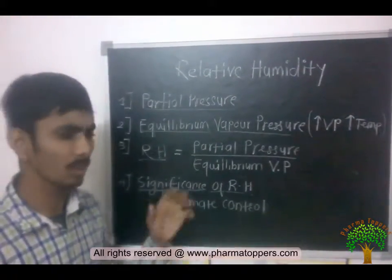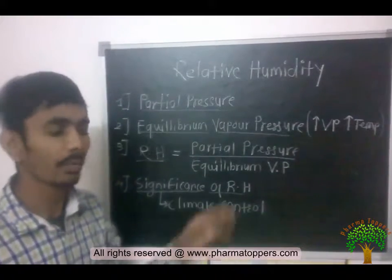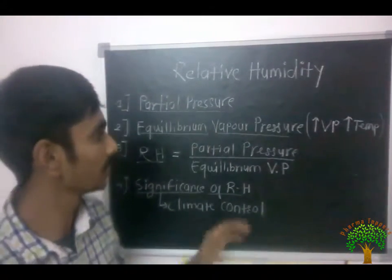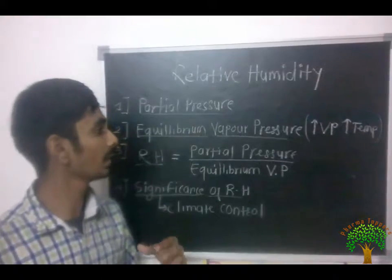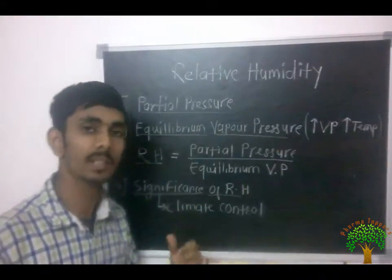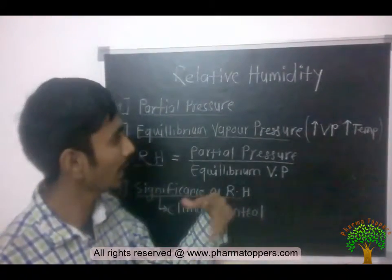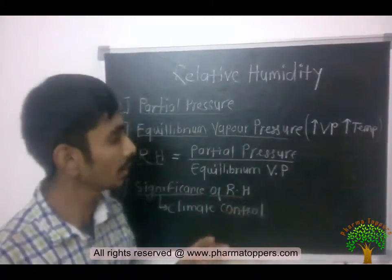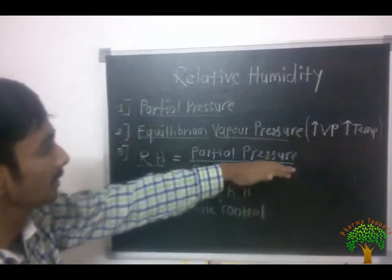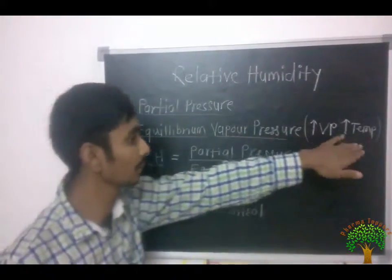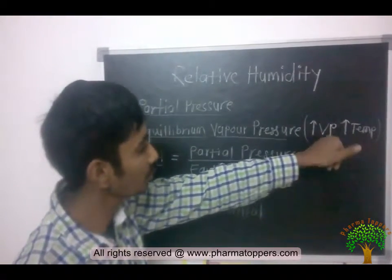What is meant by equilibrium vapor pressure? Equilibrium vapor pressure is a general vapor pressure, as we seen in the previous lecture. Vapor pressure is the pressure exerted by a gas which is in equilibrium with the solid and liquid in a closed system at a given temperature.